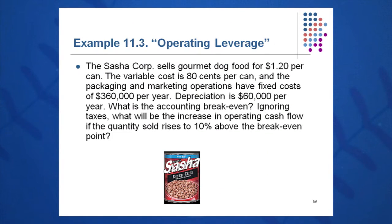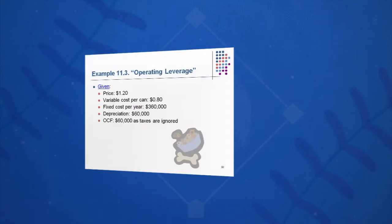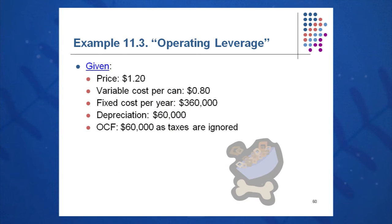Here's a sample. Sasha Corporation sells gourmet dog food at $1.20 a can. The variable cost is $0.80 per can, so the contribution margin is $0.40. Packaging and marketing have fixed costs of $360,000 per year. Depreciation is $60,000 per year. The questions are: what is the accounting breakeven, and what is the increase in operating cash flow if we sell 10% more above breakeven? OCF at breakeven is $60,000, and taxes are ignored.